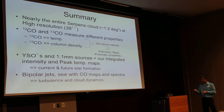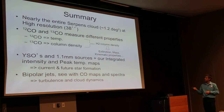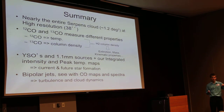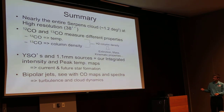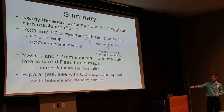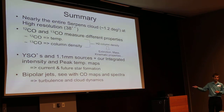In summary, we mapped nearly the entire Serpens molecular cloud — 1.2 square degrees at high resolution. We calculate the H2 column density to derive extinction, mass, and other cloud parameters from the 12-CO and 13-CO temperature and column density values. Comparing our data to YSO and 1.1-millimeter sources gives us current and future star formation information, and looking for bipolar jets and regions of turbulence allows us to see how cloud dynamics in Serpens is coupled to star formation.